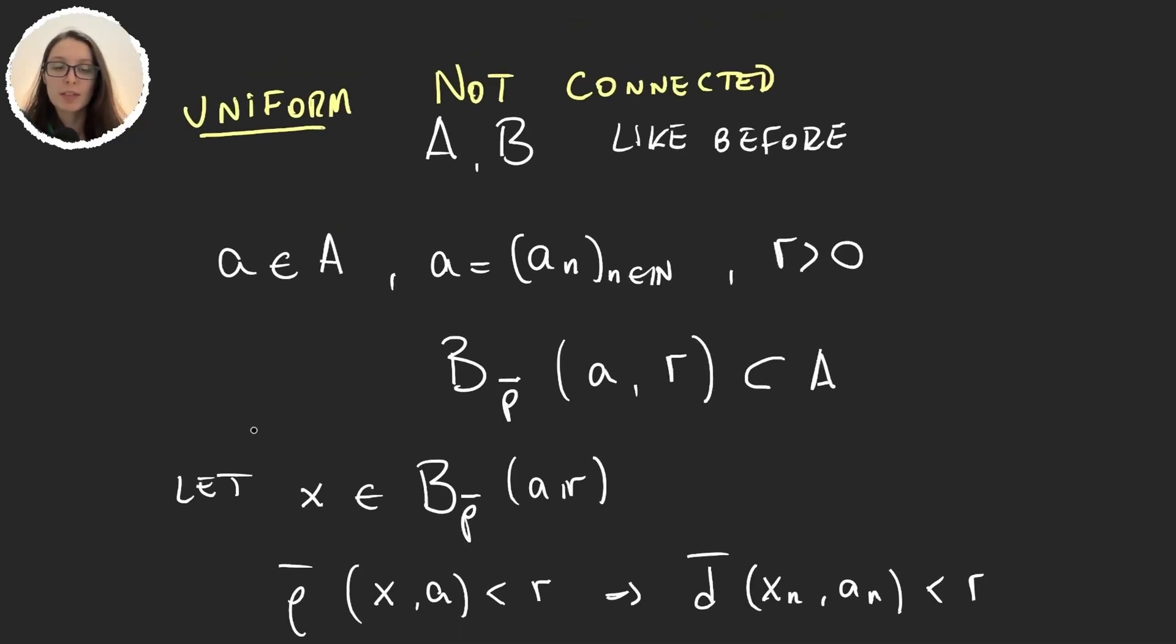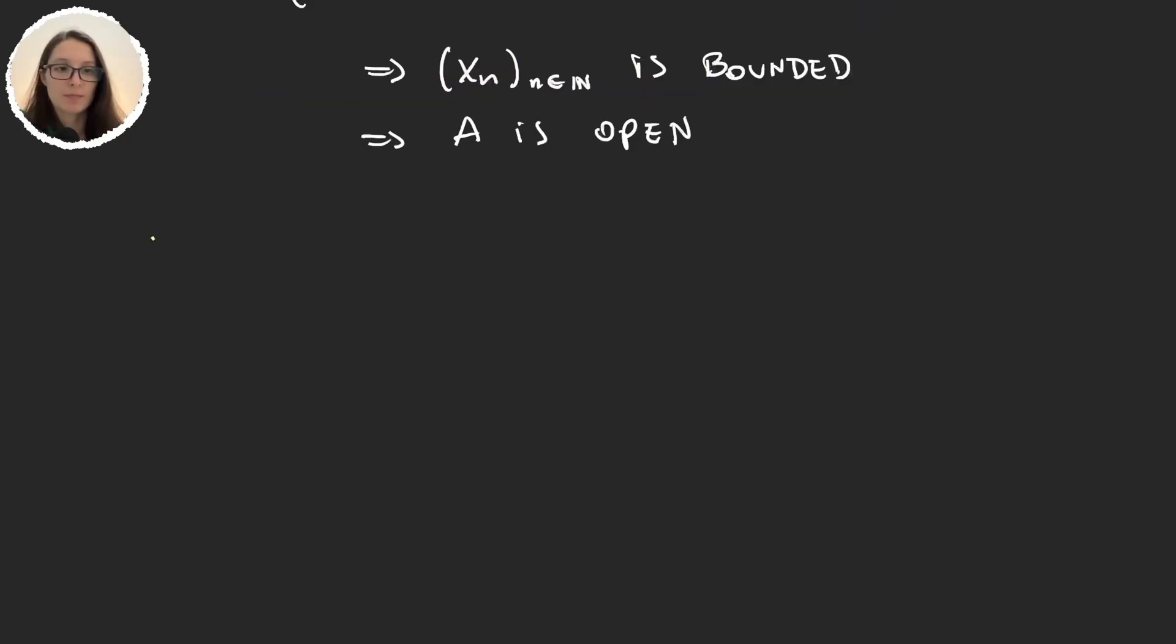And with this we have that R omega with the uniform topology is also not connected. Let's finish the video by proving what happens with the product topology, and this proof is again not trivial at all but with the product topology it is connected.